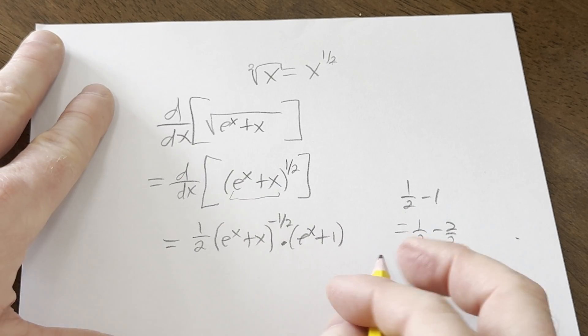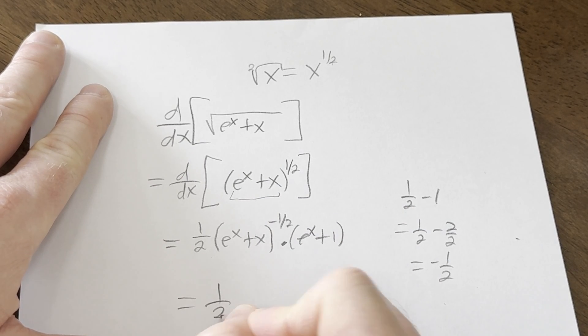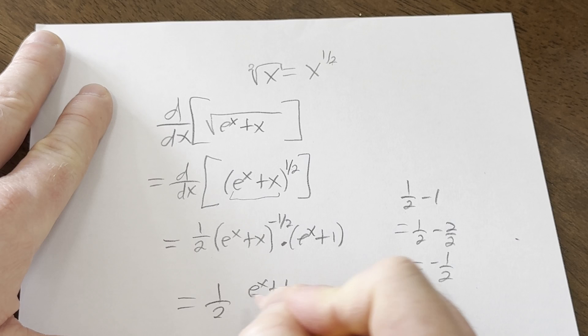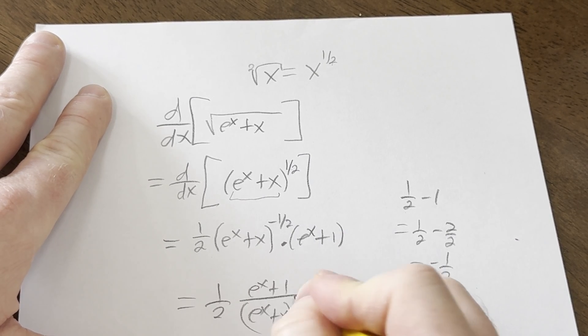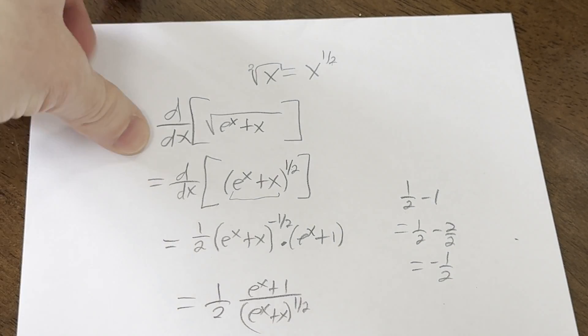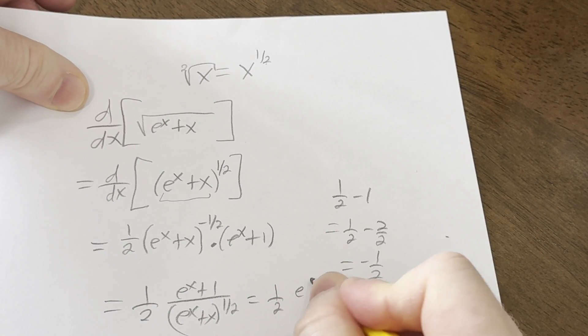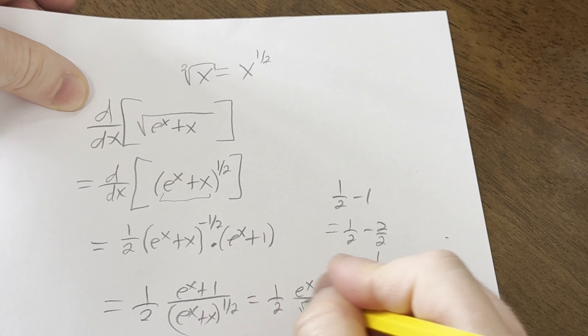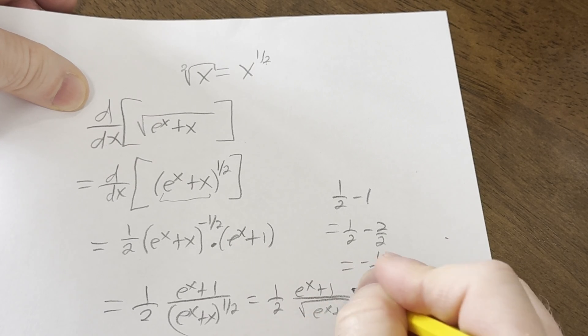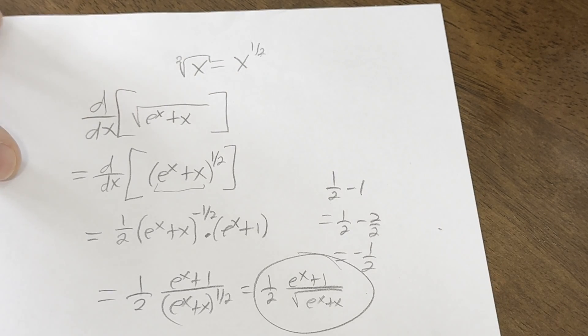You can't do much else here. We bring this downstairs. And we can go back now to a root function. So I'll write it here. This is 1 half, e to the x plus 1 over the square root of e to the x plus x. And that would be the answer in this particular problem.